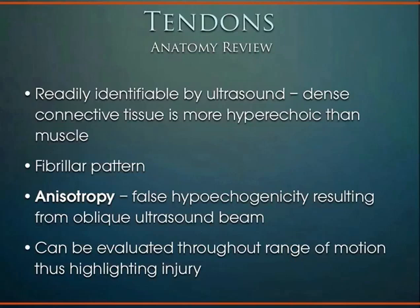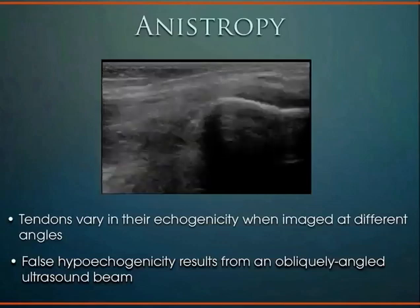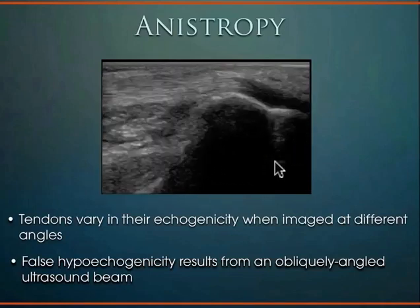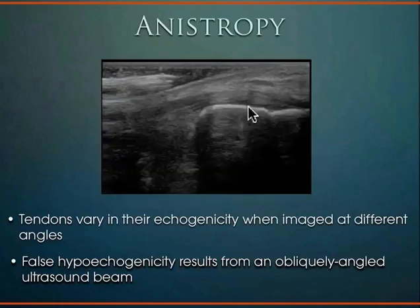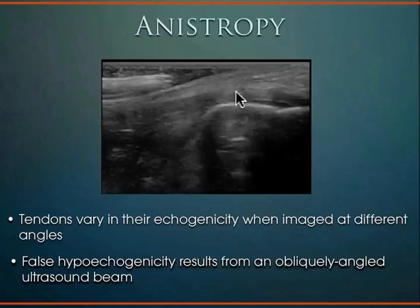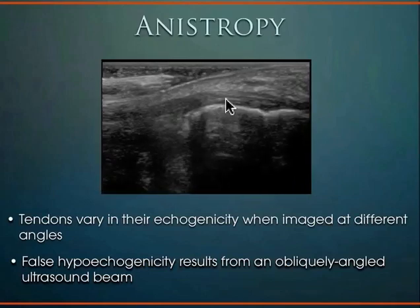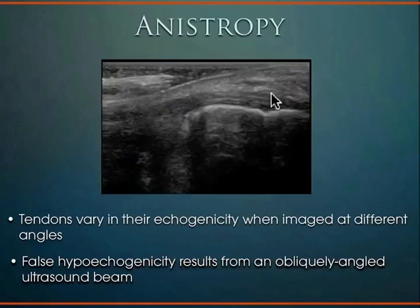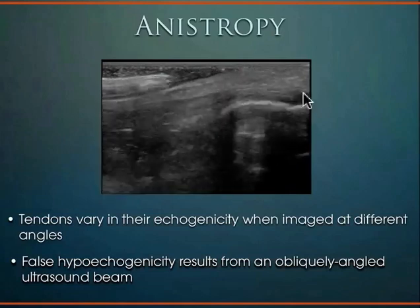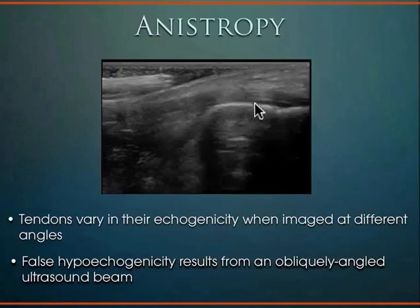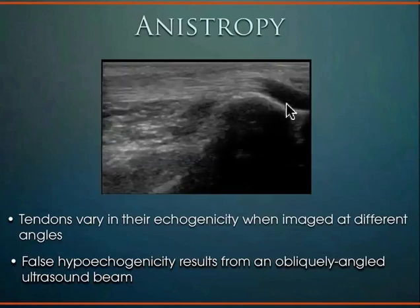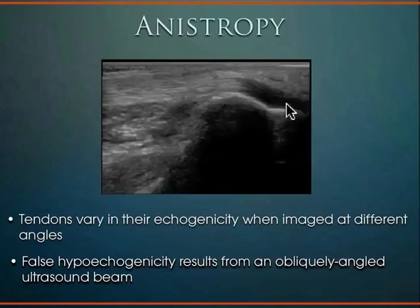Another benefit of tendons is that imaging is real-time and dynamic — you can actually see the tendon move through the whole range of motion of the joint and identify any disruption in anatomy. This is anisotropy demonstrated: the probe is moved heel to toe, and the tendon tissue goes black, then comes back into view with the normal fibrillar pattern. If you paused at the moment it's black, you'd say there's a complete tendon tear with fluid there — but it's just anisotropy. Little subtle adjustments reveal the normal tendon tissue.